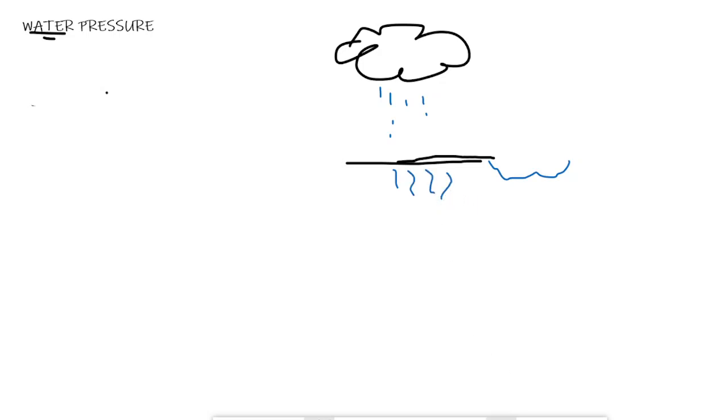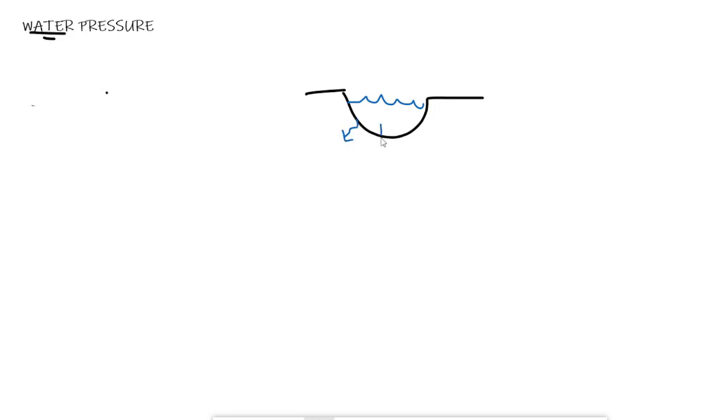And that'll be a steady state process. Alternatively, in the same kind of environmental vein, you might have a stream running like this. And some of the water, again, at a steady state, unless the stream is about to dry out, will be soaking into the ground underneath it.